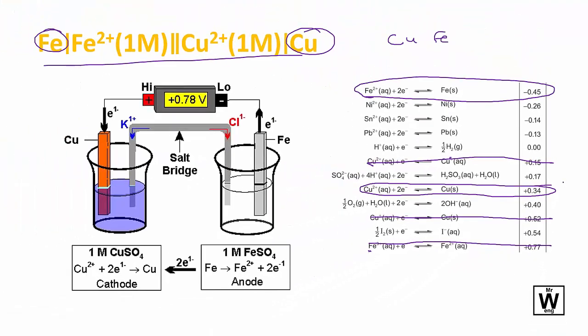That one's more positive, so this one you're going to have to reverse, and then reverse the sign. 0.45 plus 0.34 gives us our answer over here.